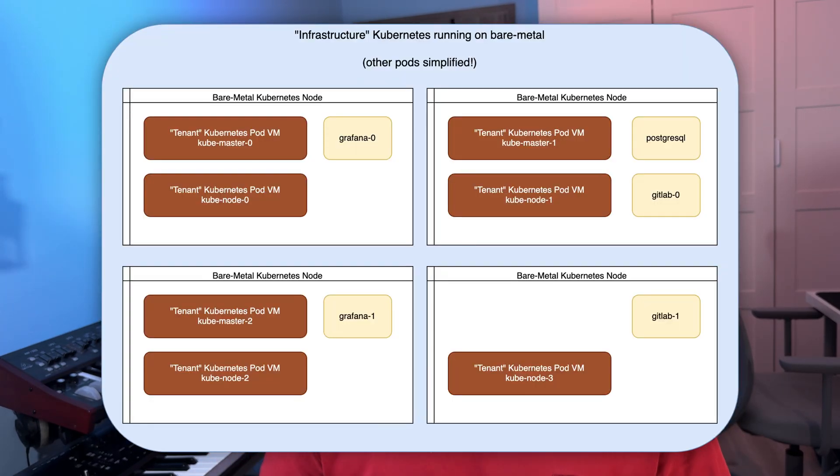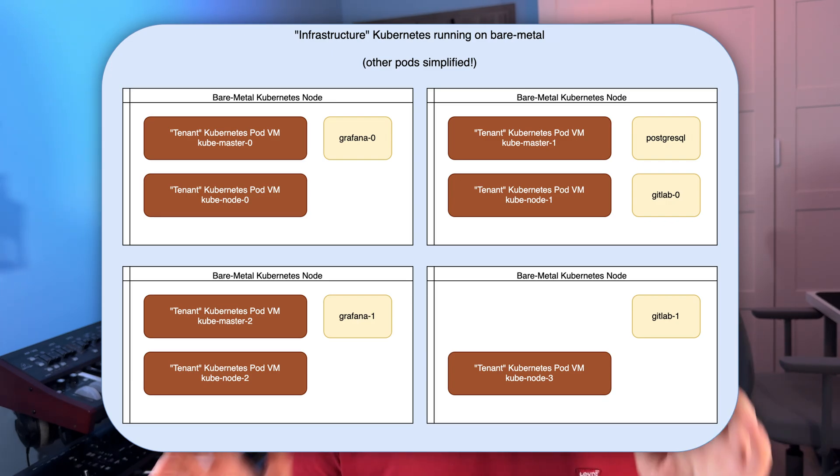Let's talk a bit more about KubeVirt because it's seriously cool. It lets you run real virtual machines right inside your Kubernetes cluster alongside your container workloads. So instead of managing a separate virtualization platform like VMware or Proxmox, you get to treat VMs as native Kubernetes resources, making them easy to deploy, scale, and manage using the same tools and workflows you already know from containers.